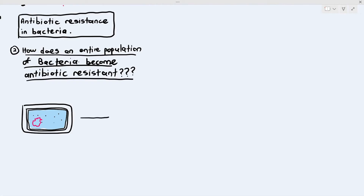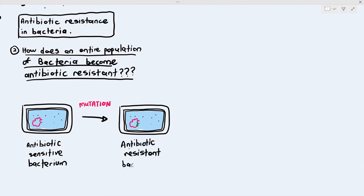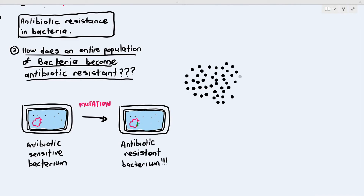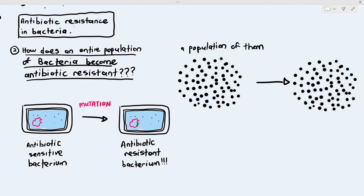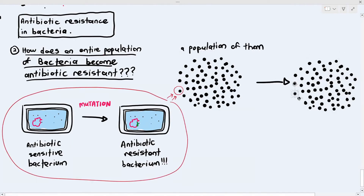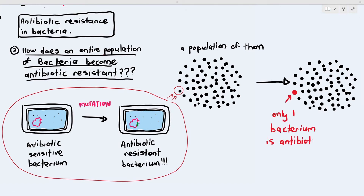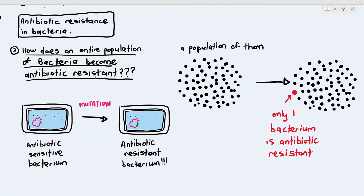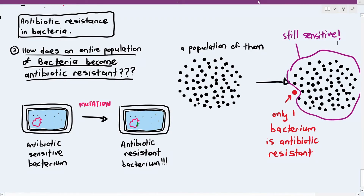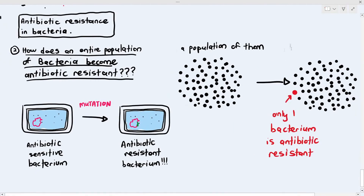There was an antibiotic sensitive bacterium, and because of the random mutation that happened, it became resistant. If I draw out a population of bacteria — represented as black dots — only one circled bacterium underwent mutation and became resistant. So there is one antibiotic resistant bacterium in a sea of antibiotic sensitive bacteria — hardly a very dangerous thing.